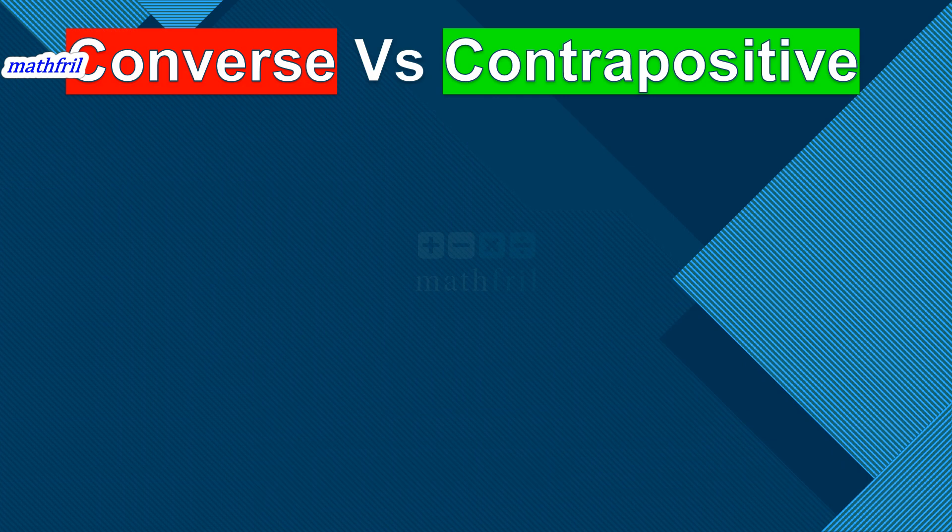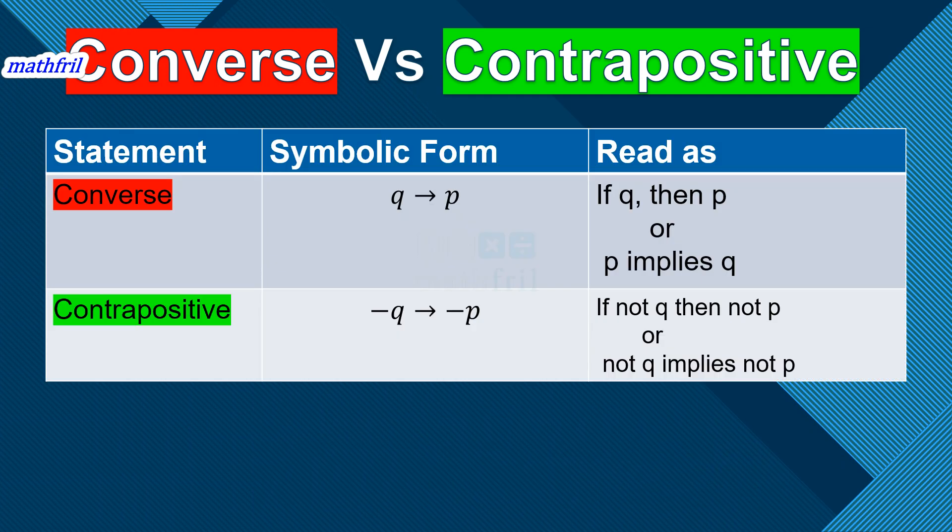Now, this is a big event. The converse versus the contrapositive. And first, our table. We have three columns here. The statement, the symbolic form, and how we will read it.